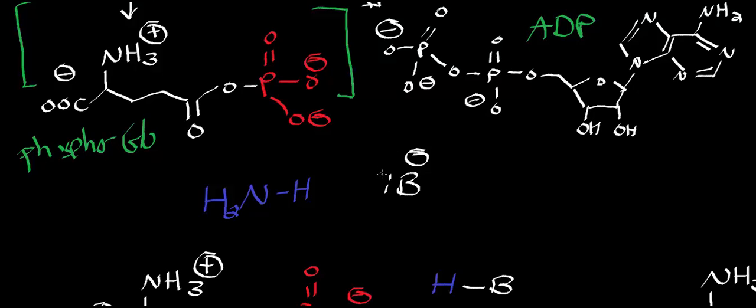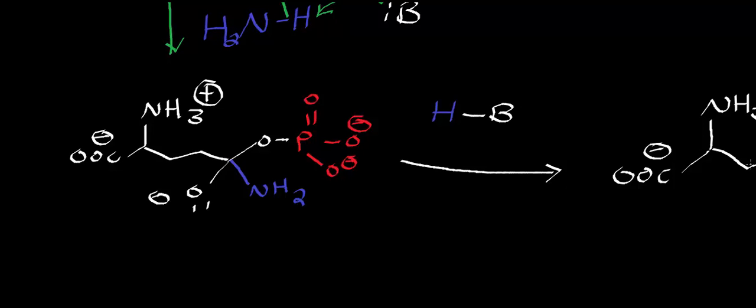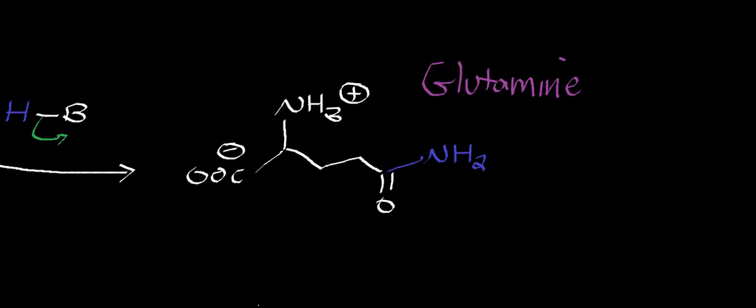Now there is a base in the active site and the base is going to deprotonate ammonia. That forces the electrons between the proton and the nitrogen to come up here and attack this carbonyl, in other words the carbonyl that links glutamate and the phosphate. That's going to generate a tetrahedral intermediate that can be seen in the next picture. This tetrahedral intermediate is very quickly going to collapse, and as the carbonyl bond reforms it kicks off this phosphate which re-abstracts the proton from this base. As you can see in the final picture that generates glutamine.